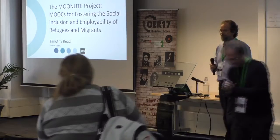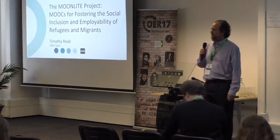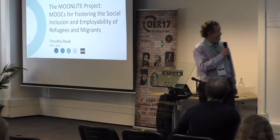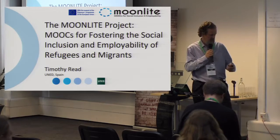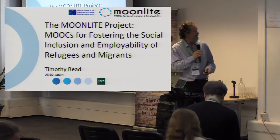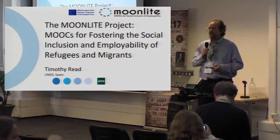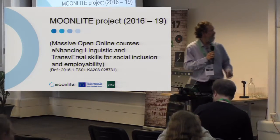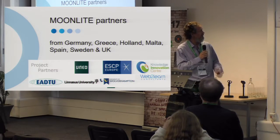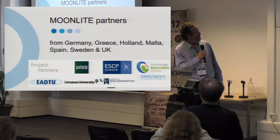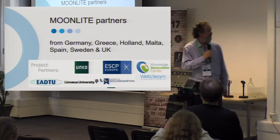Thank you very much for resisting the coffee break to be here for the start. As the title says, I'm going to talk about the Moonlight Project, which is an Erasmus Plus project we started at the end of last year, particularly focusing on the social inclusion and employability of refugees. Taking part in this project, we've got partners from seven universities — six European universities and a UK one as well.